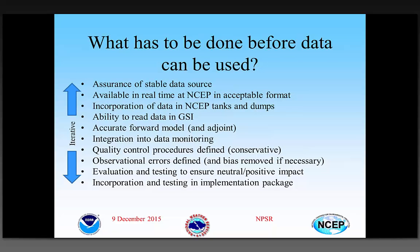These are the steps needed to incorporate a new data type into our assimilation system. First, we need to be assured it is a stable data source not changing with time. For example, there are research satellites where the operators want to experiment for the lifetime of the satellite — changing calibration, possibly making it better, but that makes it very difficult to use data that's evolving with time.